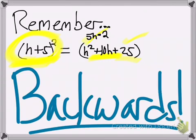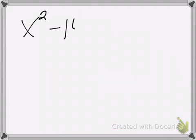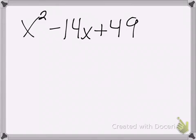But what we're doing today is going backwards. We're going to be taking the trinomial that we got as the answer and working backwards to figure out the binomial that gave it. So here's the first example: x squared minus 14x plus 49. We already know the answer is going to look like two binomials, so we can set up the two sets of parentheses.